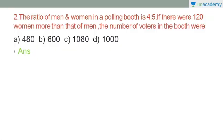The ratio of men and women in the polling booth is 4 is to 5. If there were 120 women more than men, find the number of voters in the booth. It is the ratio of men to women — 4 is to 5.